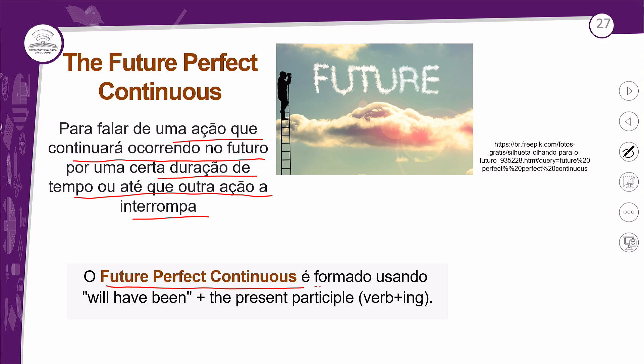O futuro perfeito contínuo é formado usando uma estrutura fixa: will, have, been — vem para todo mundo. É fixo. Então, em todas as frases afirmativas, negativas e interrogativas, você precisa colocar o will, o have e o been. O que vai mudar é o verbo que vem depois, porque pode ser qualquer verbo, qualquer ação: o verbo correr, andar, falar, comer, sorrir — qualquer coisa.